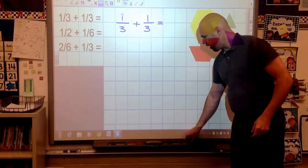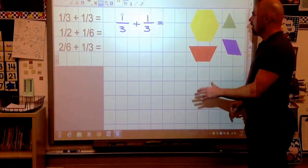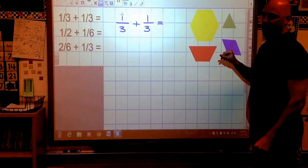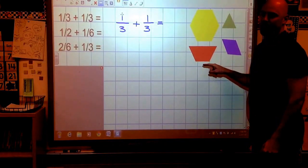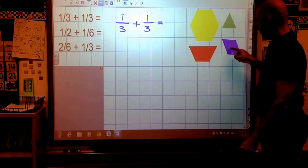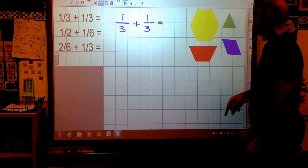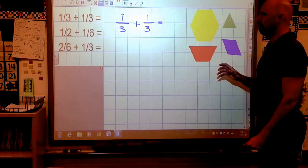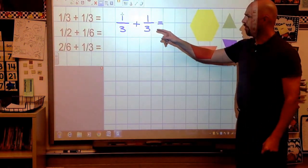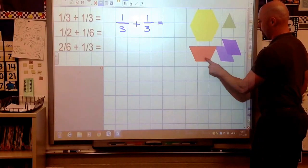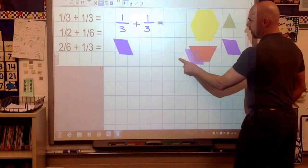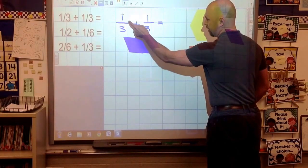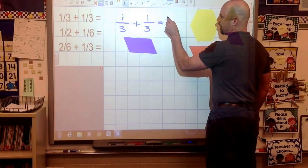Now we're going to use our pieces here. We're going to assume for everything that we're doing today, the hexagon is our one whole, which makes our trapezoid our 1/2, which makes our rhombus our 1/3, which makes our triangle our 1/6. So those are the values of all of our pieces. So when they say 1/3 plus 1/3, well, there's 1/3 plus 1/3. Put them together, I have 2/3. That's probably the easiest one we're going to get.